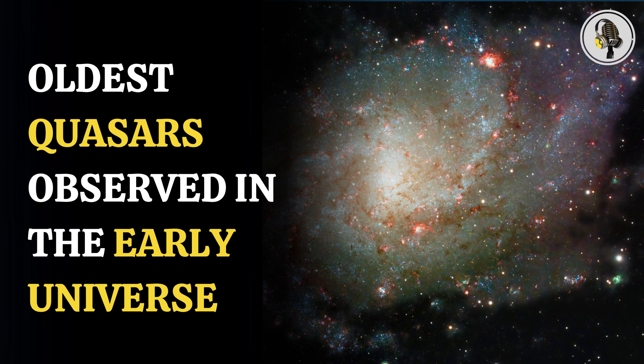The five quasars are more than 13 billion years old and the oldest to be ever observed. They likely formed between 600 to 700 million years after the Big Bang. The supermassive black holes are a billion times more massive than the sun.